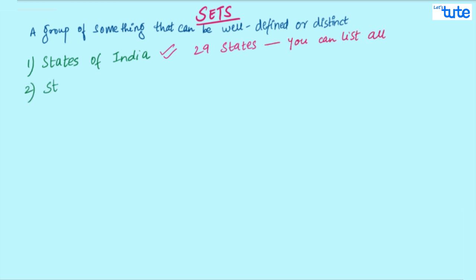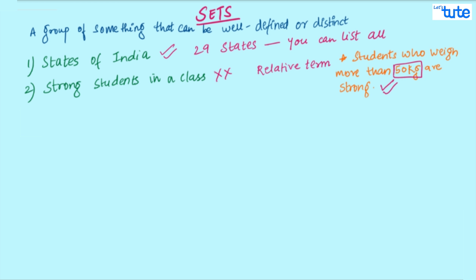The second one is strong students in a class. Well, this cannot be a set because strong is a relative term. But suppose, here if I'll add a condition like students who weigh more than 50 kg in a class are to be considered as strong. Can now this be formed a set? Yes. Because now we have a number, a quantity, or a well-defined and distinct property that we can use and form this set.